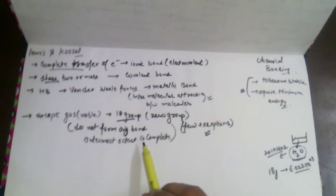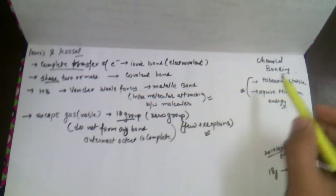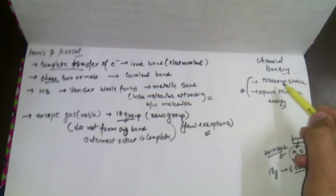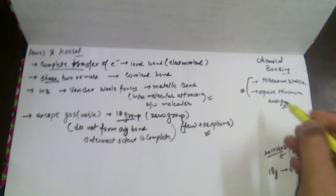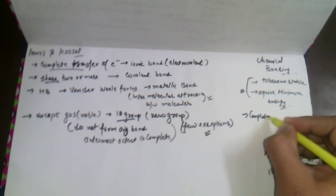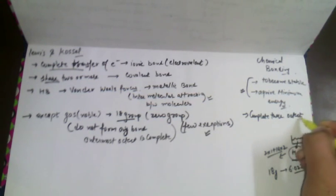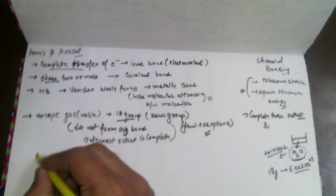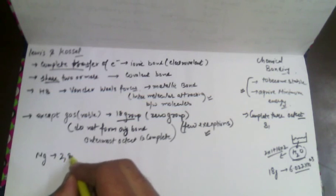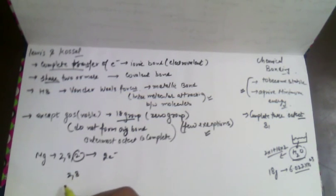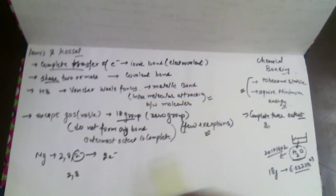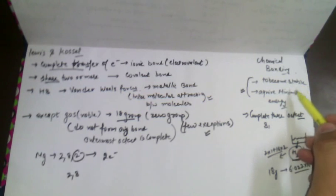Atoms never exist independently, so they form chemical bonds. When they form a chemical bond by acquiring minimum energy and becoming stable, it means they are completing their octet. For example, magnesium has the configuration 2, 8, 2. If it loses two electrons, it becomes 2, 8 — completing its octet — and this is part of the ionic bond, which we will discuss further.